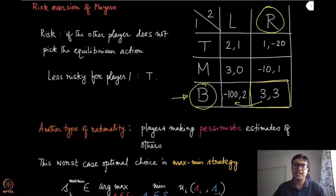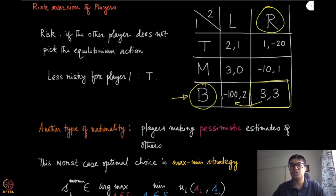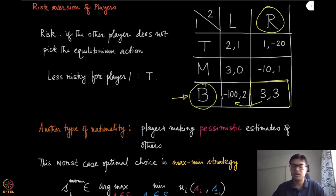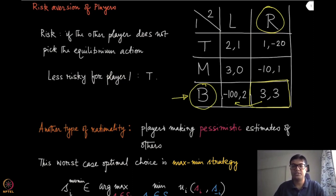How can we handle that? How can an agent who is unsure about the intelligence of the other player still play a strategy and not be super worse off? That is exactly what we are going to discuss in this module — it's called the maximin strategy. It is something like a worst case optimal choice. For strategy B, the minimum value that player one can get is minus hundred, while if it plays M, the minimum value reduces a little bit to minus ten.